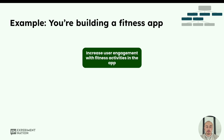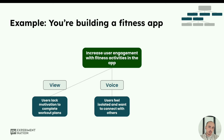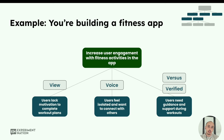Let's go back to our fitness app example. Our product goal is to increase user engagement with fitness activities within the app. By looking at data, we see that people aren't really completing the workout plans — they're lacking the motivation. By talking to customers through interviews and survey responses, we see that users feel isolated and want to connect with friends or family within the app. And by doing competitor analysis and scientific research, we notice that users need guidance and support during their workouts. So now we have three solid opportunities, backed by research, all three different directions that could drive our desired outcome.